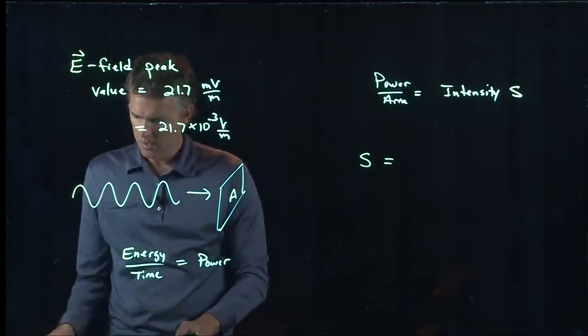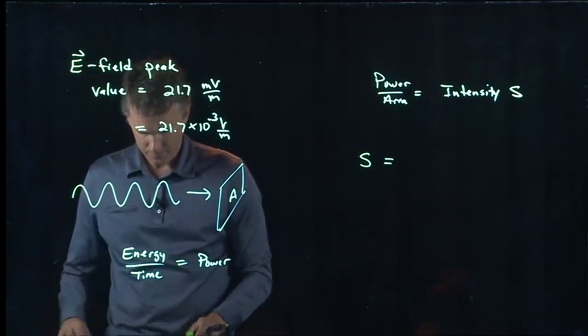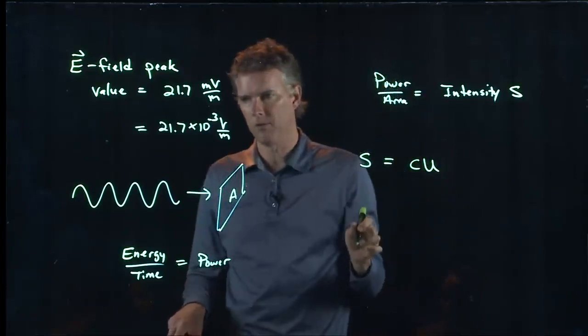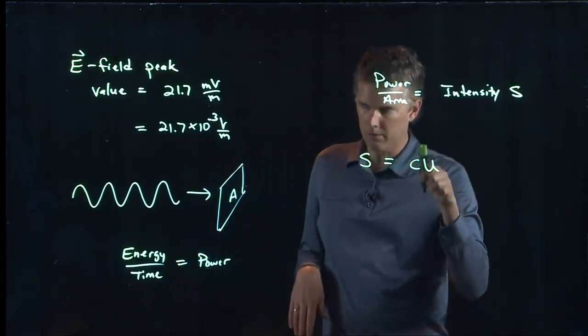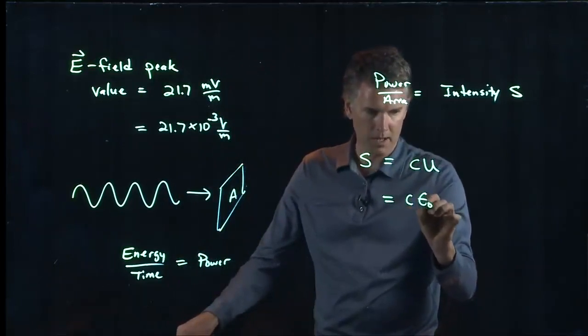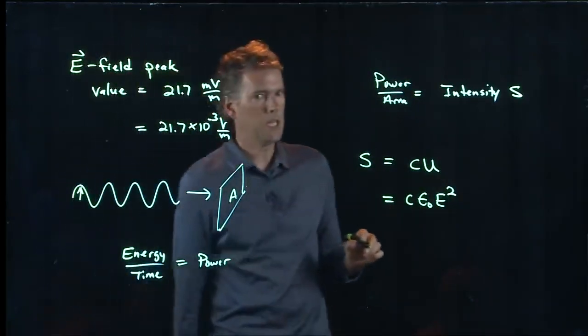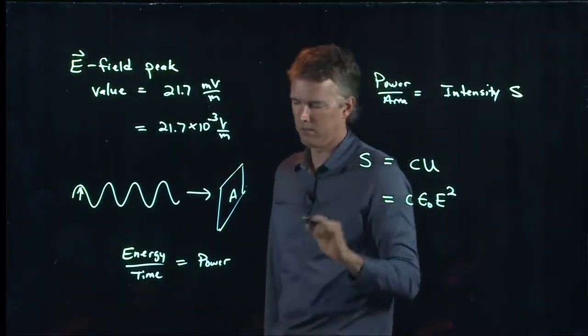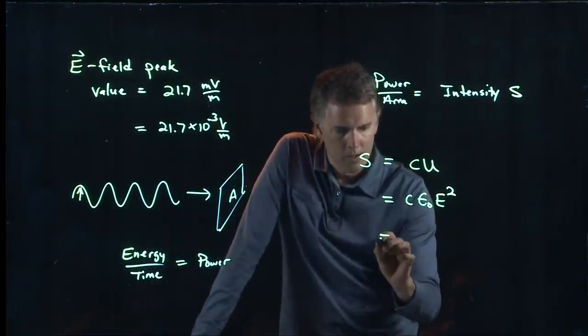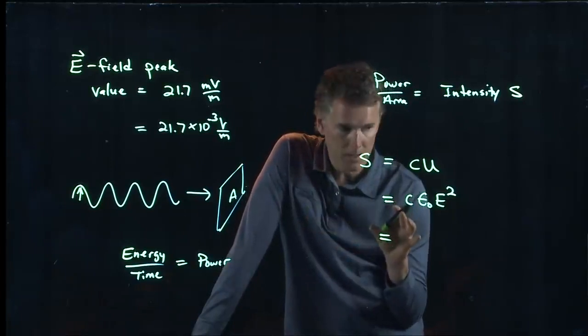What we said was the following: S is in fact equal to c times u, where c is the speed of light and u is the energy density. That is the same as c times epsilon naught E squared. So if I know E, I can in fact calculate this. Now we've got to be perhaps slightly careful about this because they tell us it's a peak value, so we have to be a little bit careful about what we're going to use in here.